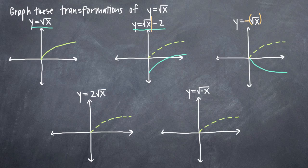Similarly, with our next function y equals 2 times the square root of x, we've got a constant coefficient multiplied by our original function — same as the last one, except now we have 2 multiplied by our original function. What that means is that we're going to be stretching the graph by a factor of 2. When we draw the graph, instead of every y coordinate lying along the original function, the new y coordinate we get will be double what the old one was.